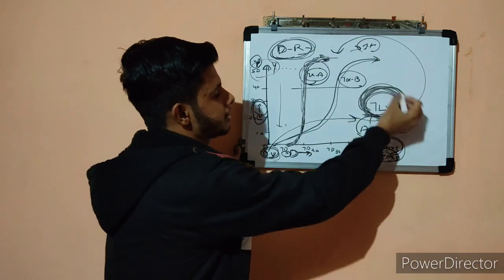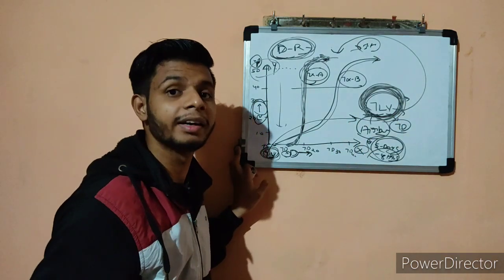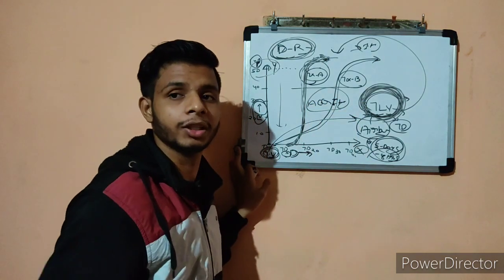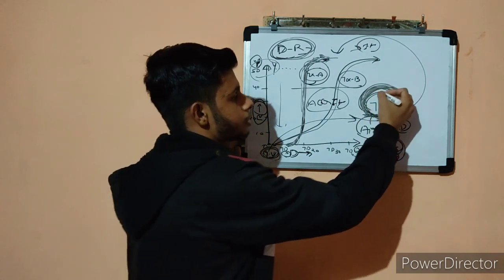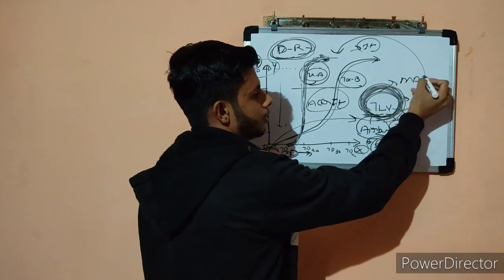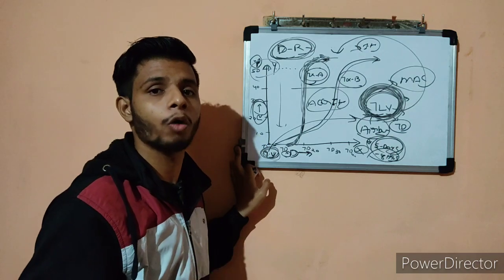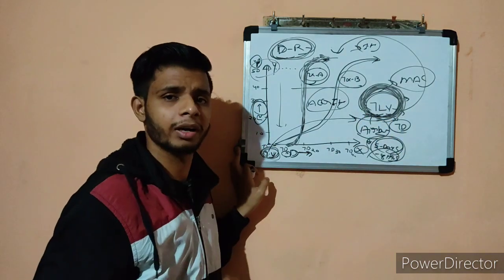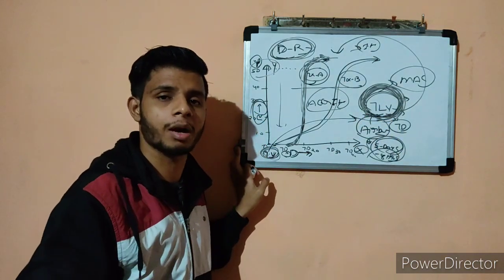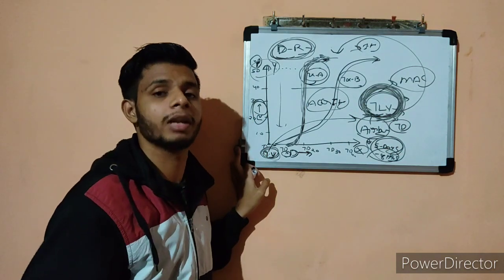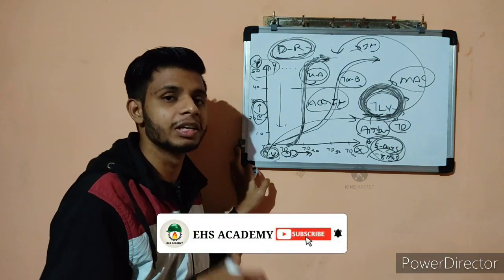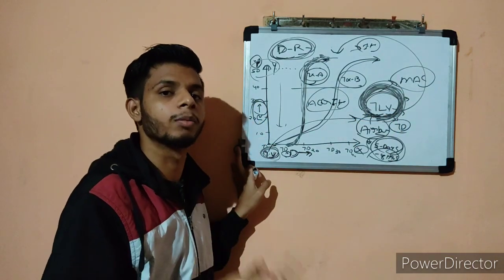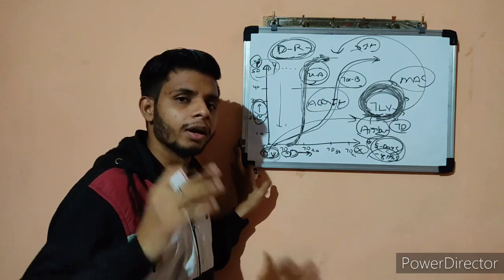This threshold value is also called TLV — Threshold Limit Value — given by ACGIH, the American Conference of Governmental Industrial Hygienists. Previously it was called MAC, Maximum Allowable Concentration. Now we call it TLV, though in many books and in the CSP examination you will also see PEL — Permissible Exposure Limit — and the meaning of these is almost the same. TLV is applicable for contaminants that are airborne.